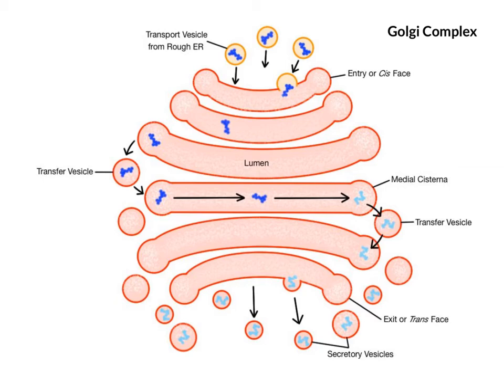Another major organelle of the endomembrane system is the Golgi complex. It also consists of membranes, but they have a different shape than the membranes of the ER. The Golgi membranes consist of a stack of flattened sacks called cisterns, which resemble pancakes or pita bread.